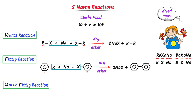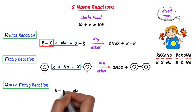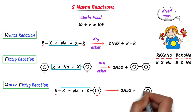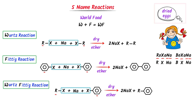Thirdly, in case of the Wurtz-Fittig reaction, I write sodium, then take the first reactant from Wurtz reaction and the first reactant from Fittig reaction. Sodium will react with the two halogens to give two sodium halide. This benzene ring and this alkyl join together to form alkyl benzene. The dried egg stands for dry ether. Thus, this is the Wurtz-Fittig reaction. Using this trick, we can easily learn these three reactions.